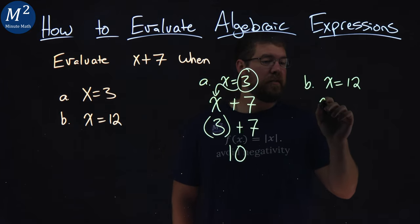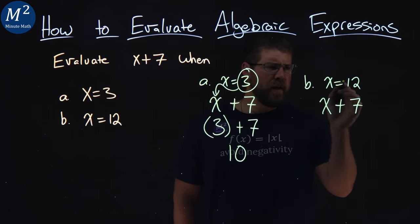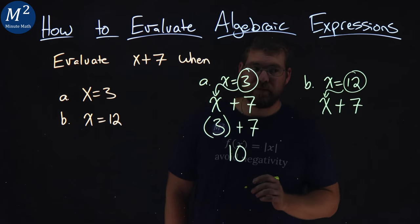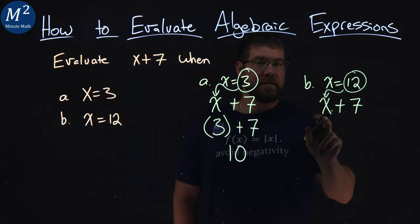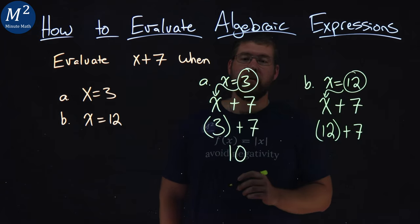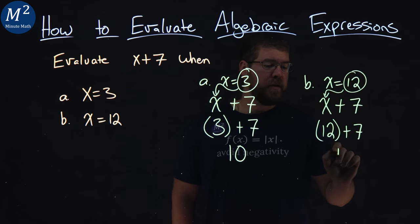I start with my x plus 7 here. It's always good to rewrite it. Then I want to substitute this 12 in for that x. 12 replaces the x, so I have 12 here now, plus 7. 12 plus 7 simplifies to 19.